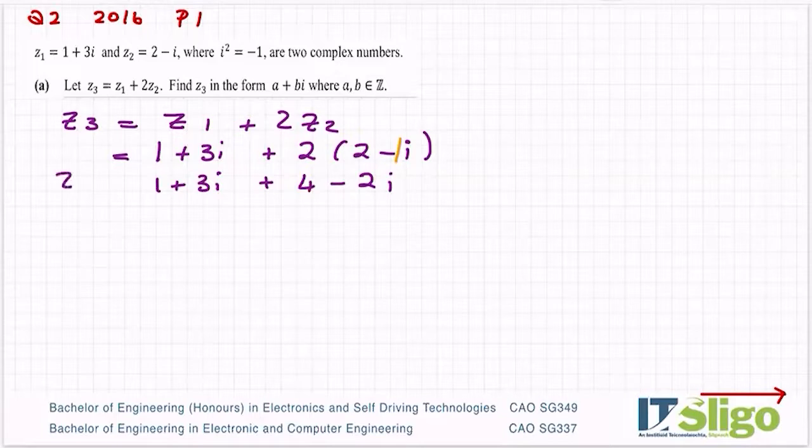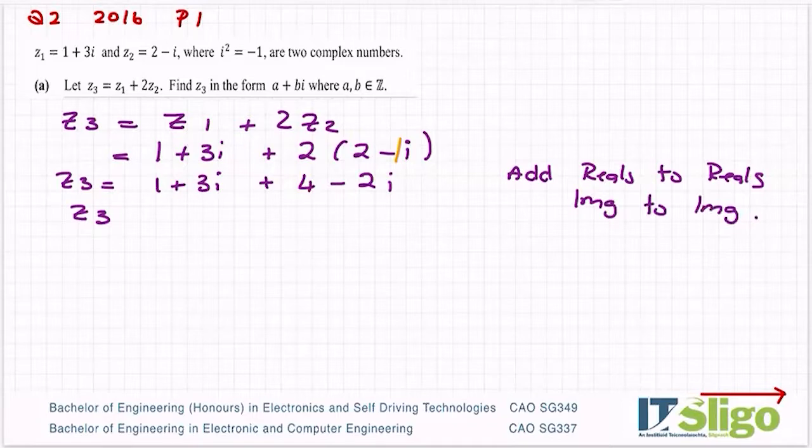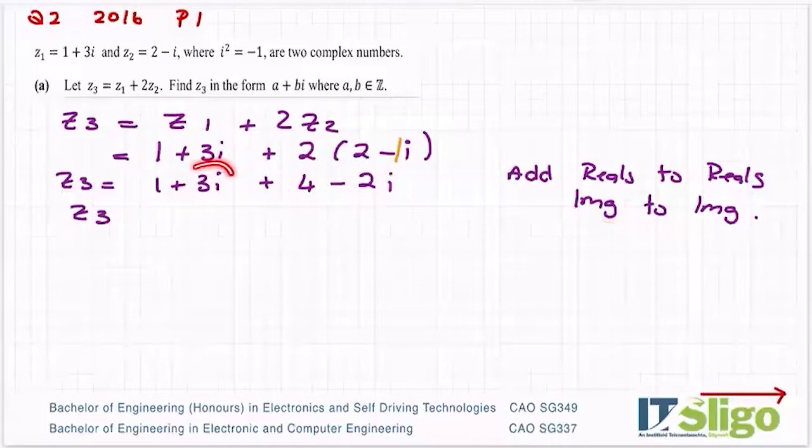And then to tidy it up, what you do is add reals to reals and imaginaries to imaginaries. You'll always recognize the imaginary part of a complex number because that's the part with the i. So add the reals to the reals: 1 plus 4 is 5. And the next part 3i minus 2i: 3 minus 2 is 1 or just simply i. And that's in the form a plus bi, so that is your Z3.